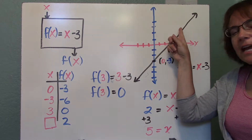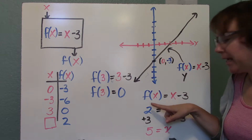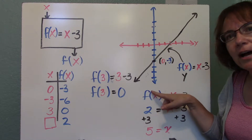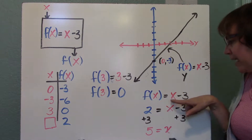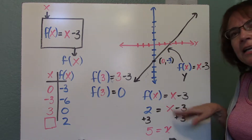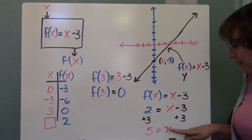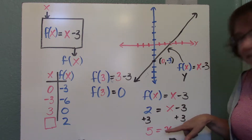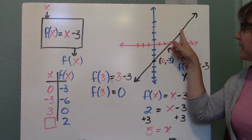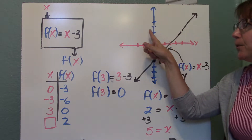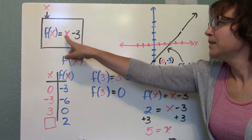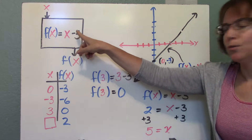We can also figure that out algebraically. We have our function f(x) equals x minus 3. Instead of f(x), we put a 2 because we want to know what x is when our output is 2. So 2 equals x minus 3. Using the addition property of equality, add 3 to both sides, and we have 2 plus 3 is 5, so x equals 5 — exactly what we guessed from the graph. When our input is 5, our output is 2. We can check: substituting 5 in, 5 minus 3 is 2. Output is 2.